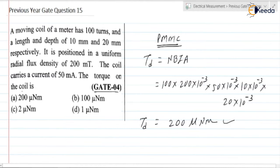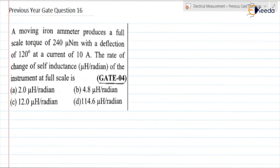This is the deflecting torque. If you check the options, the correct option is option A. This is about previous year GATE question number 15. Previous year GATE question number 16. Let us read the question. A moving iron ammeter produces a full scale torque of 240 micro newton meter with a deflection of 120 degrees at a current of 10 ampere. The rate of change of self-inductance of the instrument at full scale is?